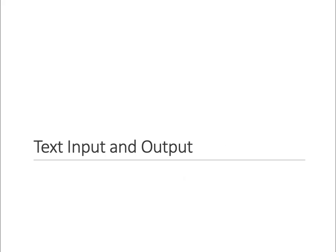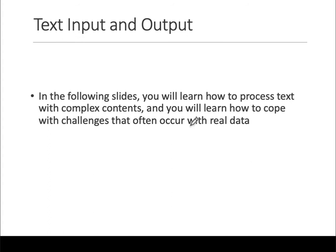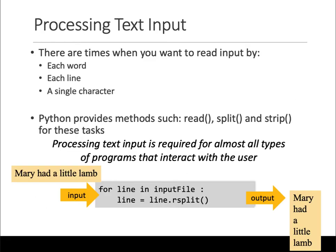Now we're going to check out how to process text with a little bit more complexity. Until now, what we have done is read lines and not much else. How do you cope with challenges that occur with real data? There are times when you want to read one word at a time, one line at a time, one character at a time. Python provides many methods such as read, split, strip, etc. that you can use to extract meaning from text. Processing text is required for almost all types of programs.